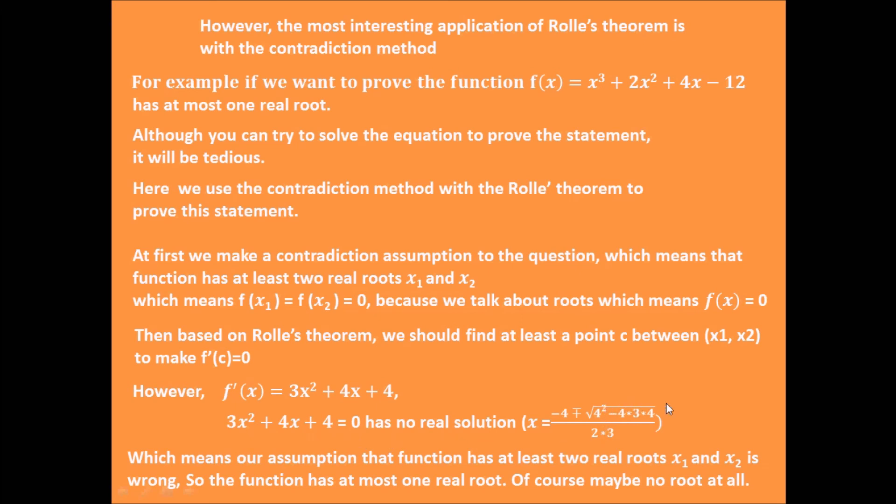The number under square root is negative, which means we couldn't find a point between x₁ and x₂ as a derivative equals 0. That means our assumption violates Rolle's theorem. Only the original statement is right. So this function has at most one real root, maybe no root.